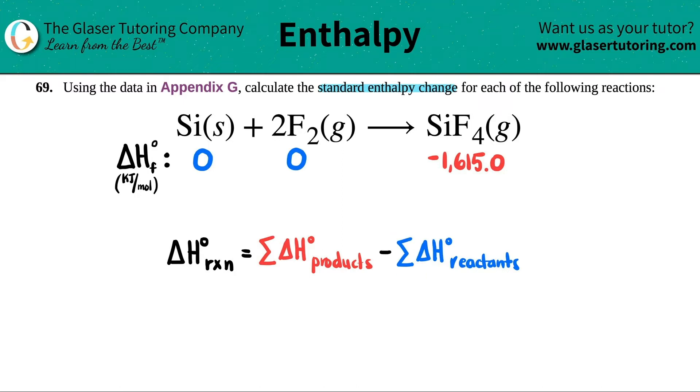So basically what you're going to do is you're just going to get one big number for your reactants, get one big number for your products, and then just do products minus reactants. Just know that RXN is for the reaction. So the whole delta H for the reaction would be the products minus the reactants. So let's do it.